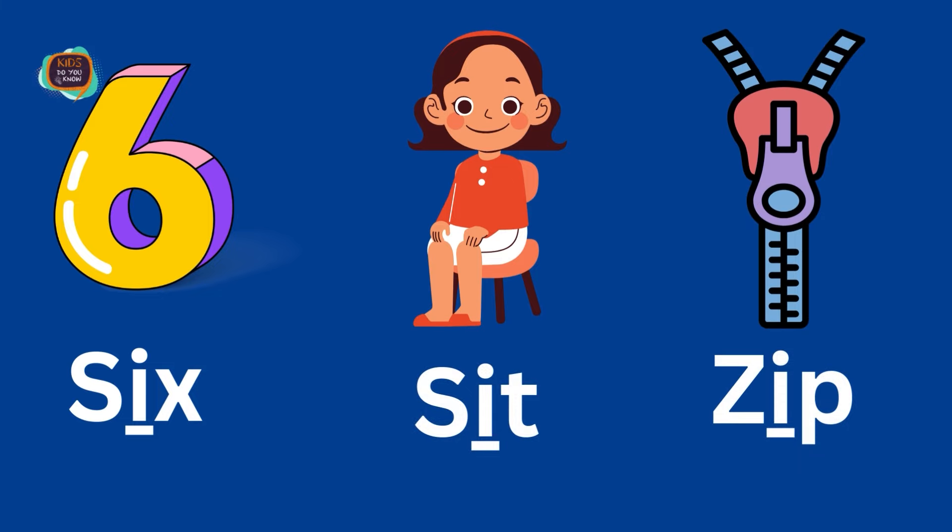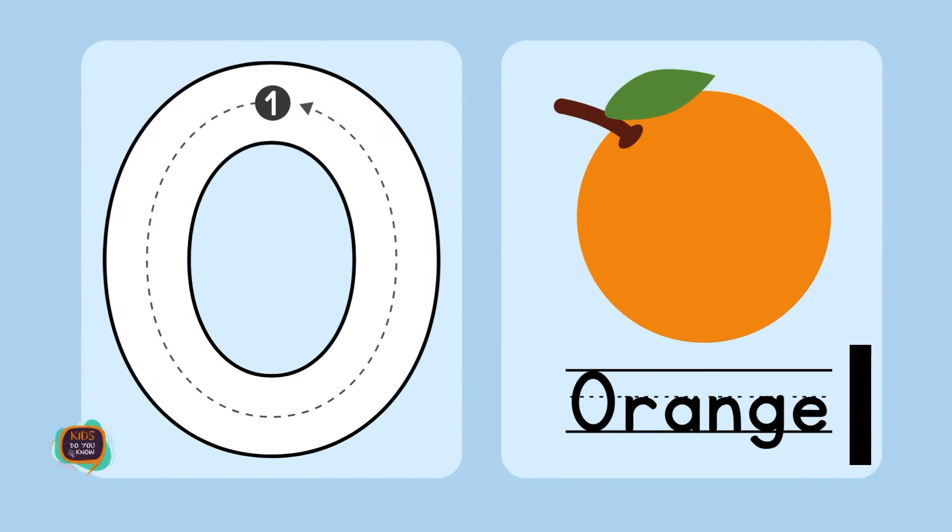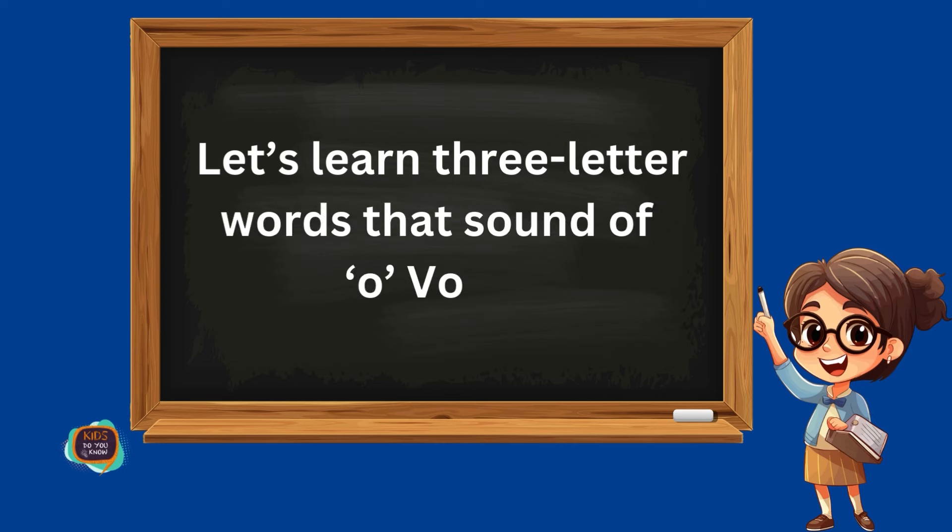Musk. O, murmur. Let's learn three-letter words that sound of O vowel.